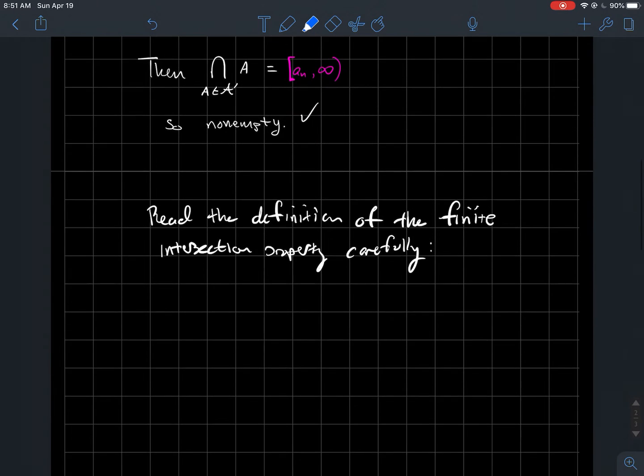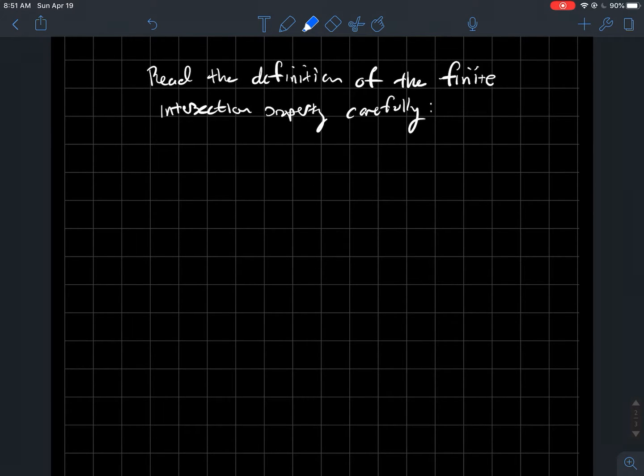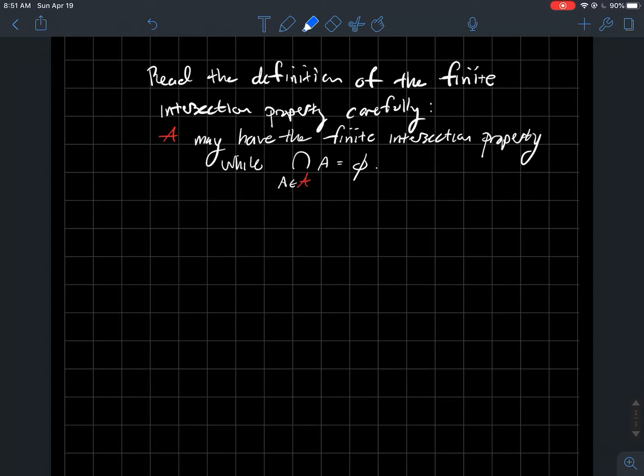Now, what can be a little bit confusing or tricky? Make sure you read the definition carefully. Fancy A might have the finite intersection property, but it's still possible that if I took the intersection of all the sets in fancy A, then that could be empty.